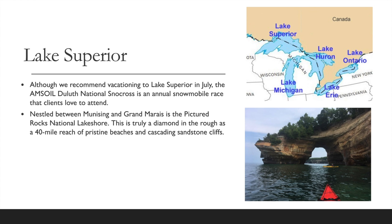Although we recommend visiting Lake Superior in July, the Amsoil Duluth National Snowcross is an annual snowmobile race that clients love to attend. Nestled between Munising and Grand Marais is the Pictured Rocks National Lakeshore — a truly remarkable 40-mile stretch of pristine beaches and cascading sandstone cliffs that you must see.